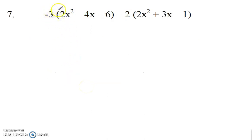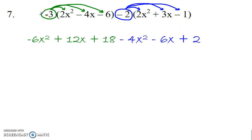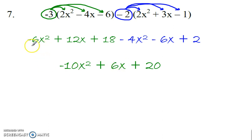Here we go. We have a little bit of distributive property before we can subtract. So we need to distribute the negative 3 to everything inside these parentheses, and the negative 2 to everything inside the second set of parentheses. That gives me this for the first set. And then for the second set of parentheses, negative 2 — notice I didn't write minus negative 4; I'm using that negative here, so it's just negative 4. Then combine like terms: put the squares together, that gives me negative 10x squared. The x: 12x minus 6x is 6x. And 18 plus 2 is 20.